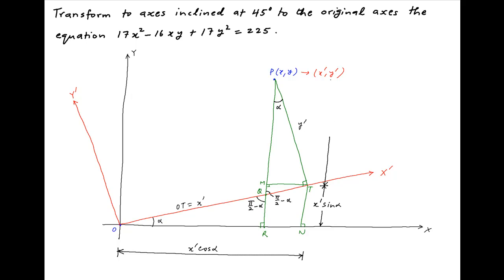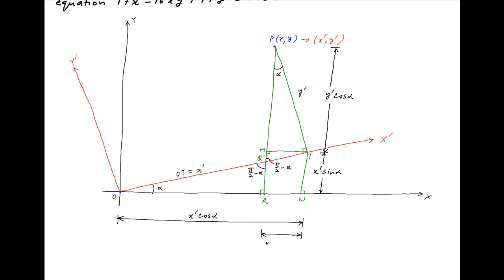Therefore in right angle triangle PMT, the distance PM is equal to Y' cos alpha and the distance MT is equal to Y' sin alpha. Finally note that the distance OR is equal to X and the distance PR is equal to Y.